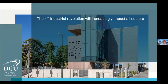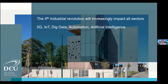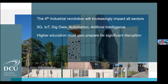At a more specific level, we're at the start of the fourth industrial revolution, defined by rapid technological change: fifth-generation networks, internet of things, big data, automation, and artificial intelligence. It's creating lots of opportunities but also challenges. There's much discussion around whether it's going to cannibalize a huge number of jobs currently fulfilled by humans, and we know it's going to impact all sectors, including higher education.